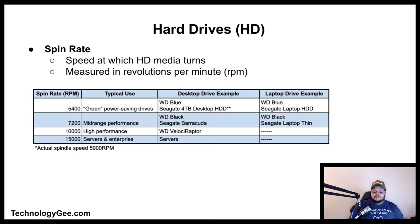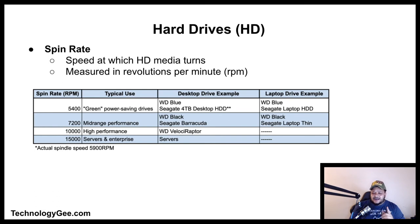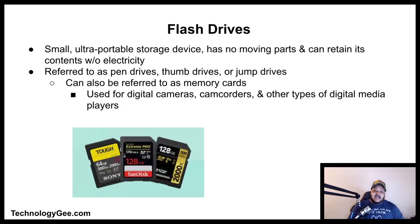The speed at which hard disk media turns is called the spin rate, measured in revolutions per minute (RPM). A comparison chart of spin rates can be found on the TechnologyG.com website.